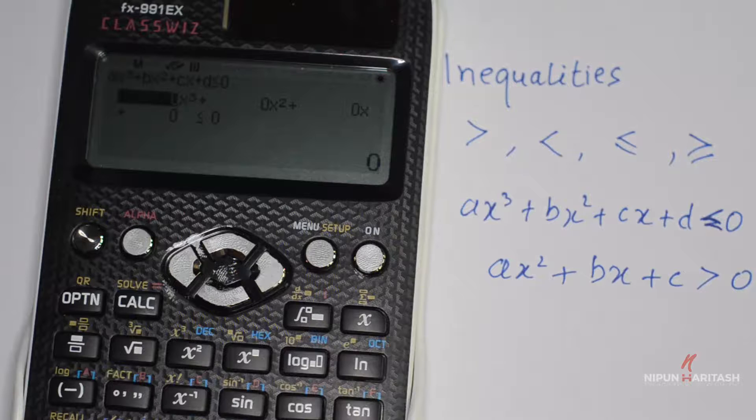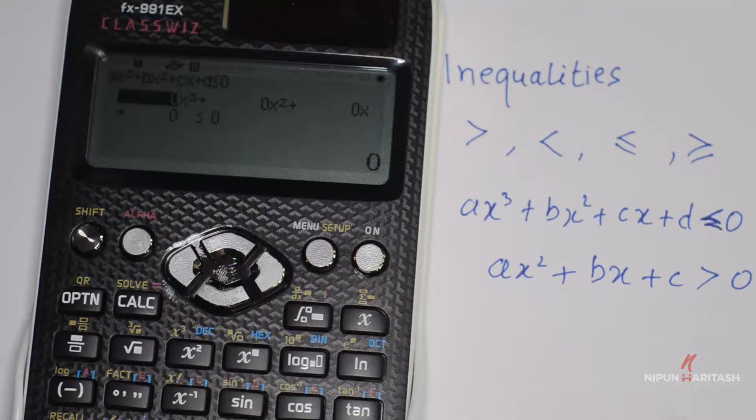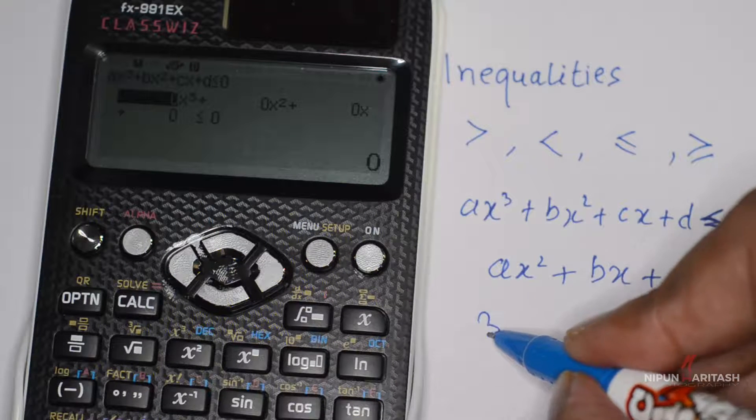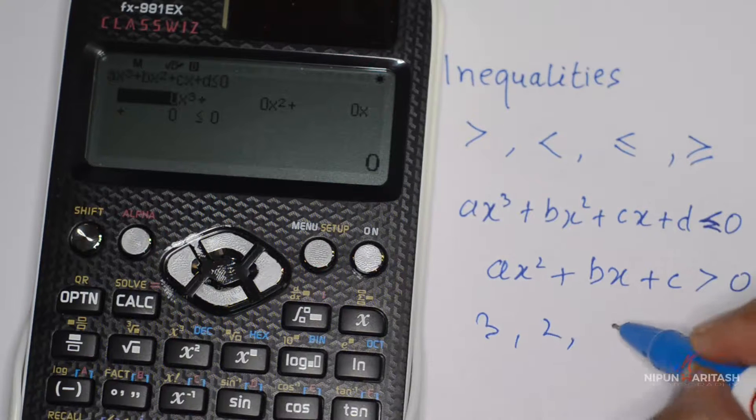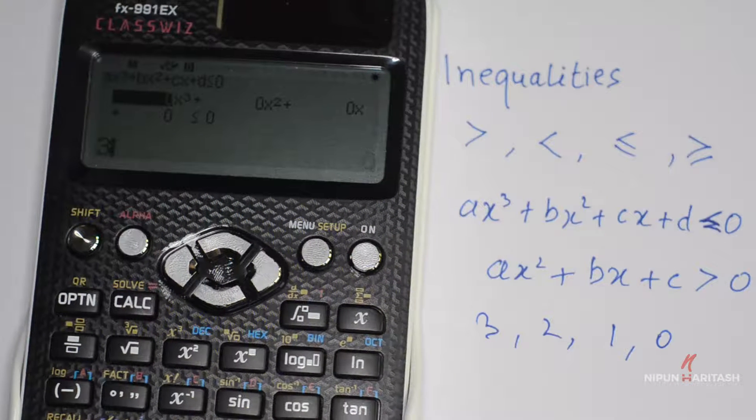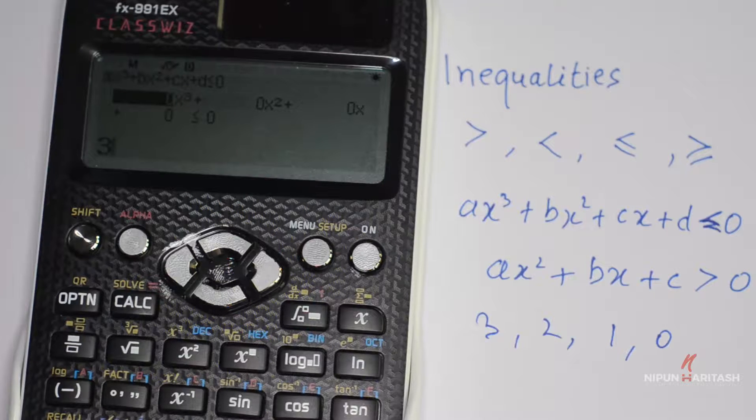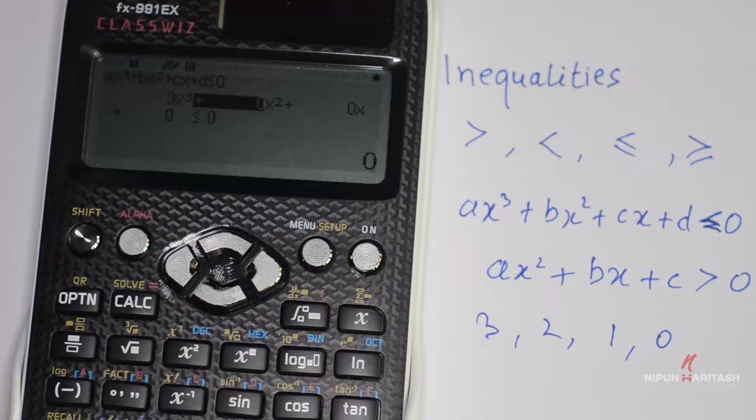What you need to do is put in some arbitrary constants like 3, 2, 1, 0. So you need to press 3, and then equal. It jumps to the next coefficient.